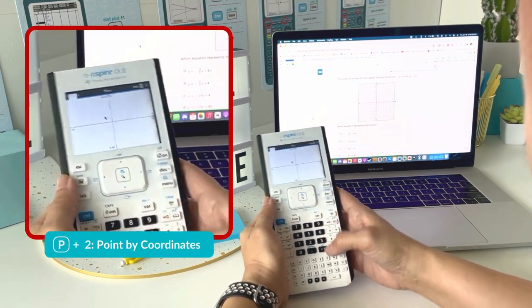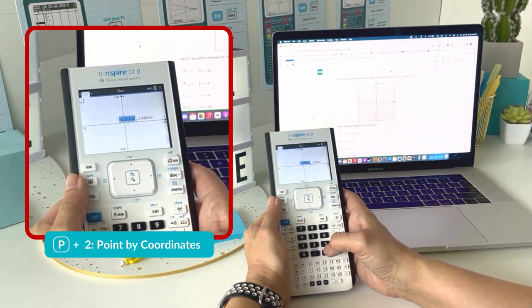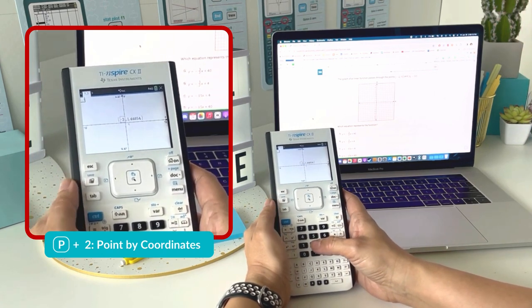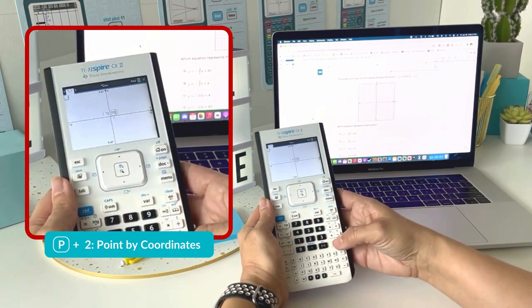From there, I'm going to type the letter P and choose number two, point by coordinates. I'm going to type in the two coordinates they gave, so negative two, enter, and 70.